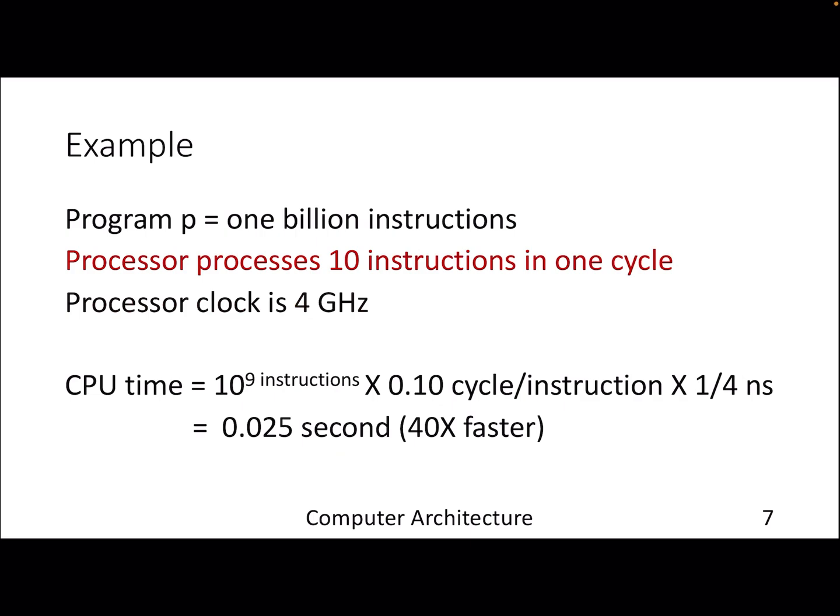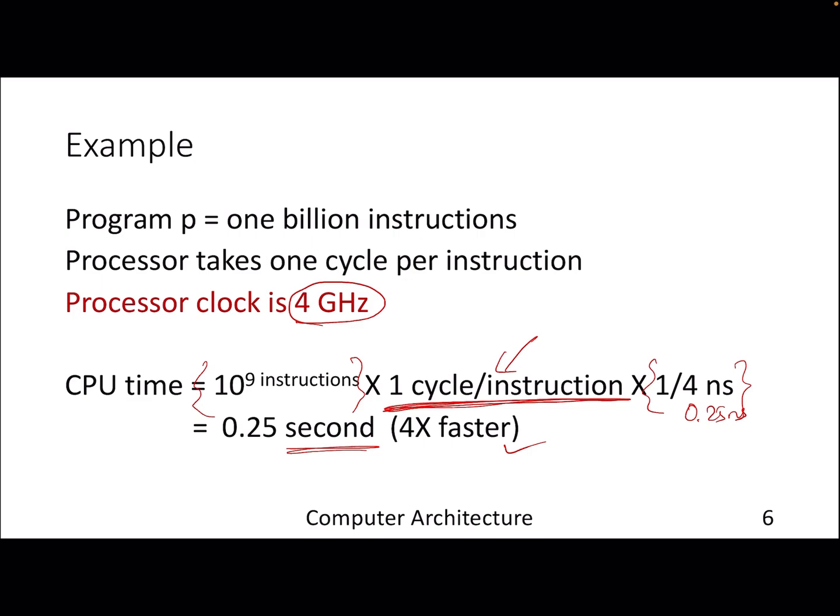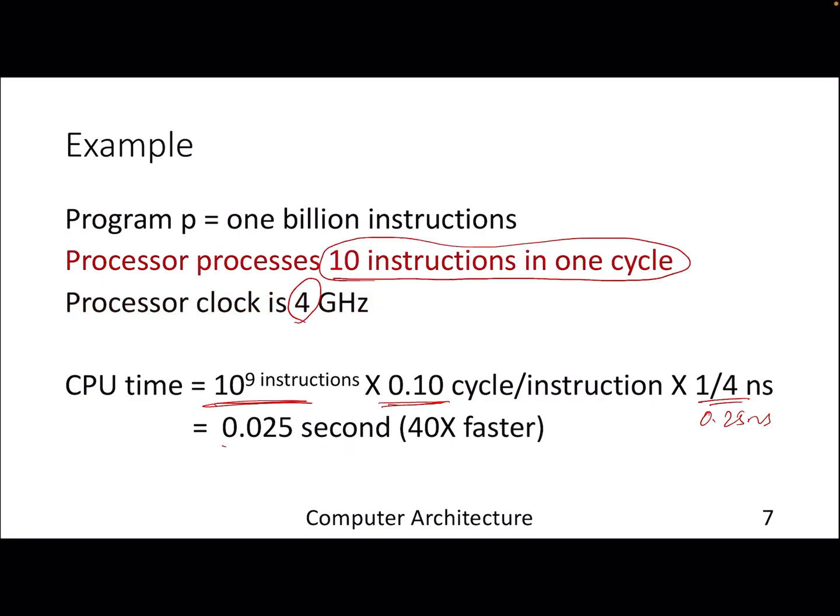Now let's change a bit. Let's assume the processor can execute 10 instructions in one cycle. That means the cycle per instruction is actually 0.1. Because in one cycle you can process 10 instructions, so the cycles it takes for one instruction is 0.1 cycle. Instructions are the same - one billion. Clock cycle is four gigahertz, so that is 0.25 nanoseconds. If you look at the previous slide it was 0.25 second. Now we have improved to 0.025 second.